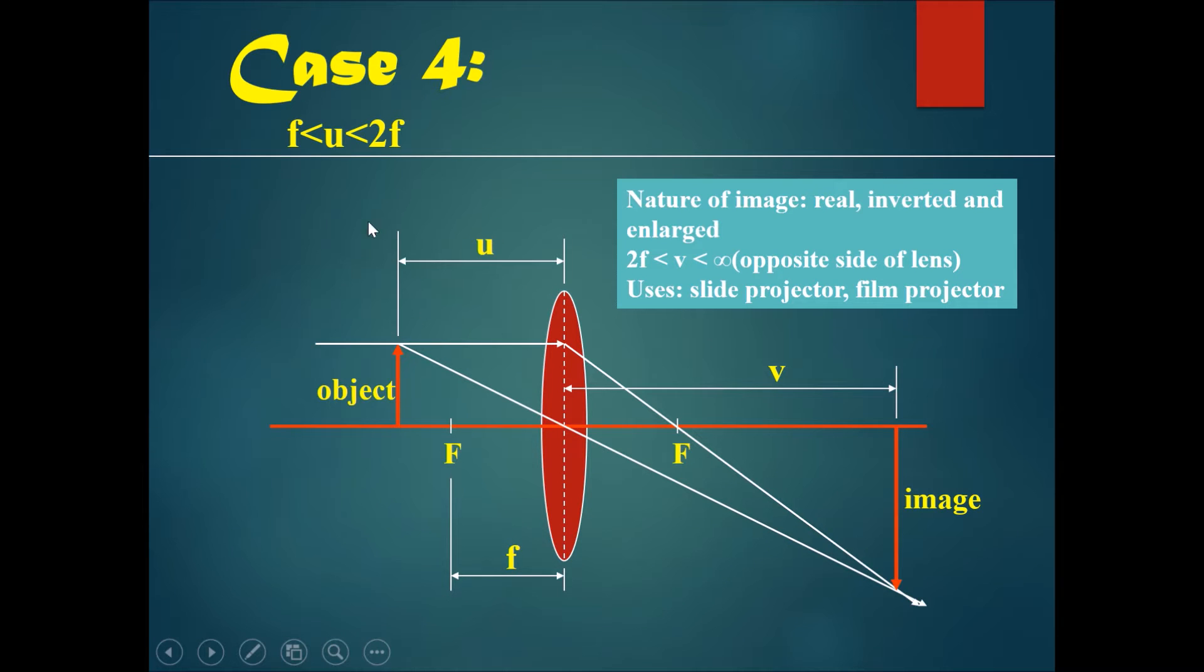And then now we have case 4. Case 4, the object is between 2f and f. When you have an object that's between 2f and f, you will have an image over here if you draw it correctly. You can see this image is slightly different. It has become bigger.